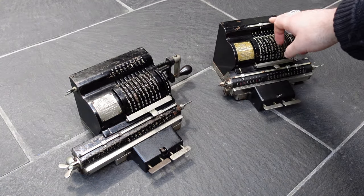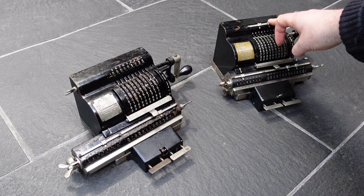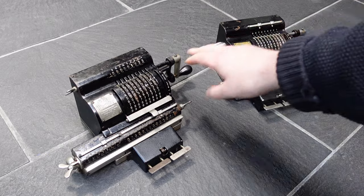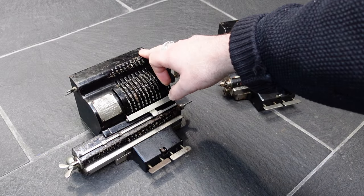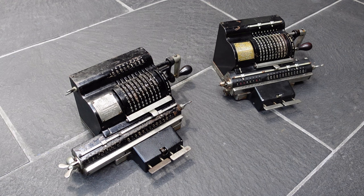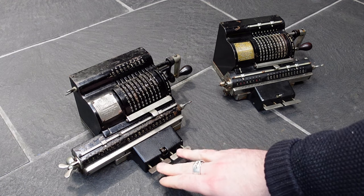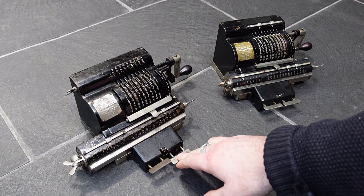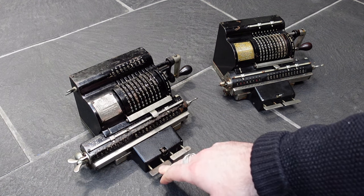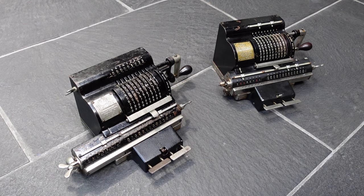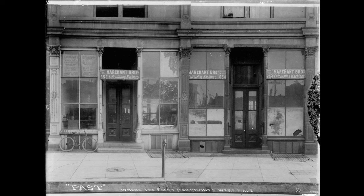For example, this bar with the decimal pointers for the input, that's missing on this machine, so I'll transfer that. And maybe I'll exchange these carriage shifting buttons.